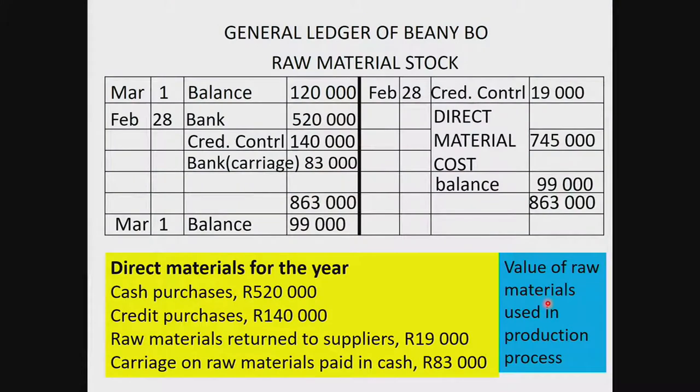The direct material cost is the value of the raw materials that we're going to use in the production process - R745,000 is how much we're sending to the factory to produce the beanies. The R99,000 closing balance is found in information A on page 11, where they give you both opening and closing balances.